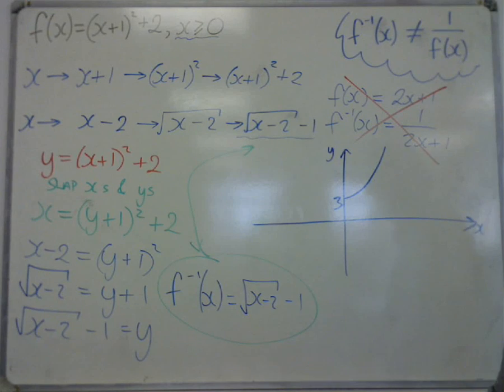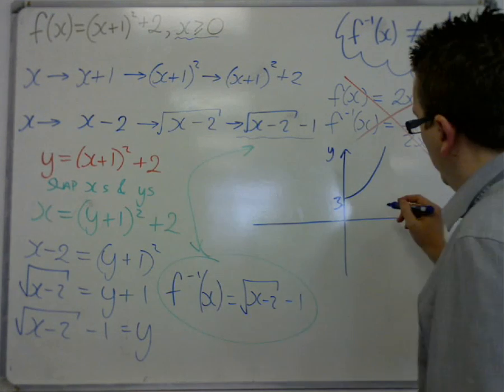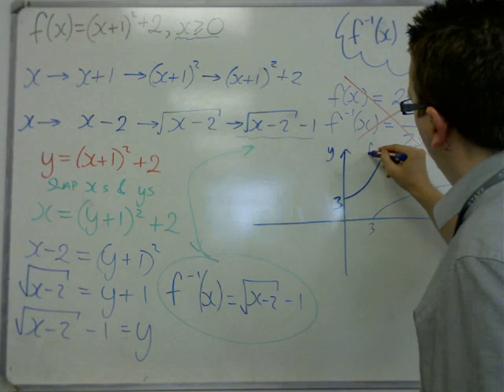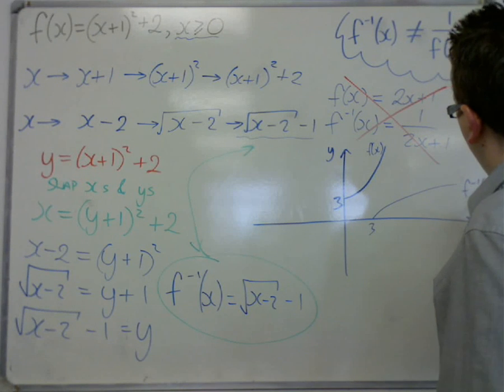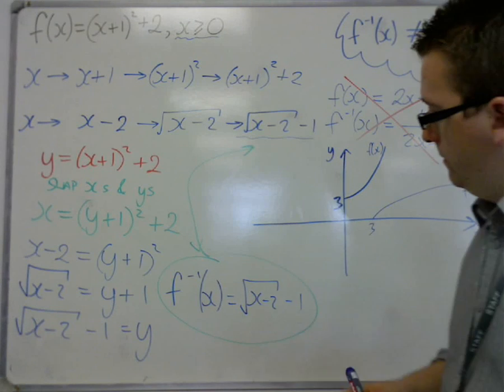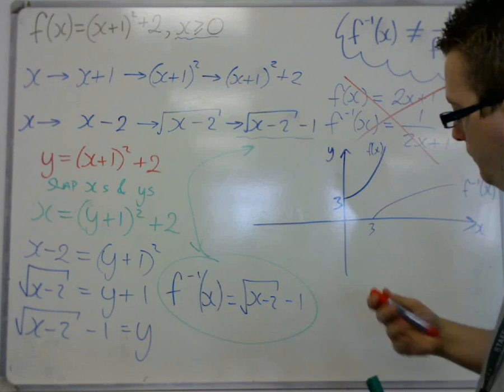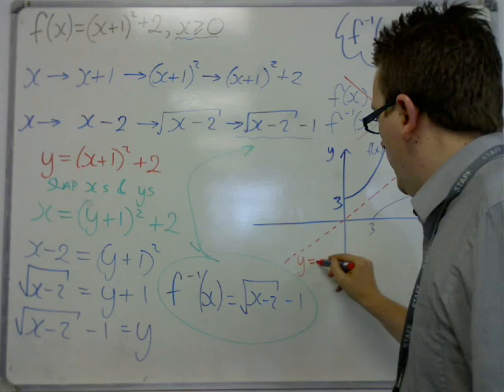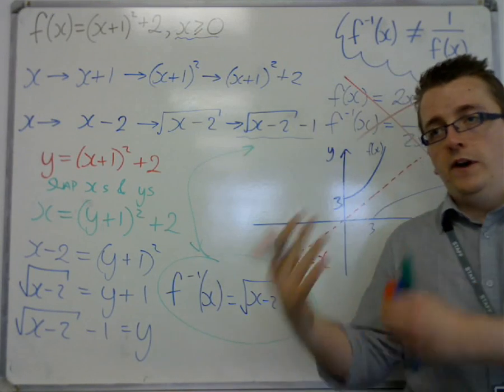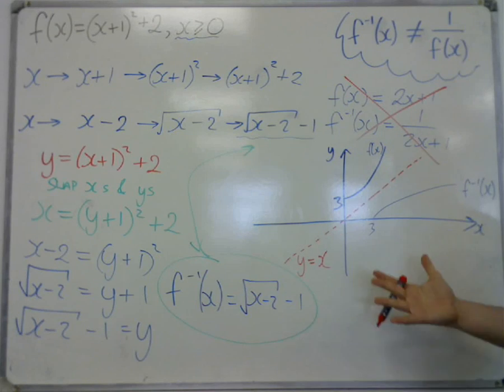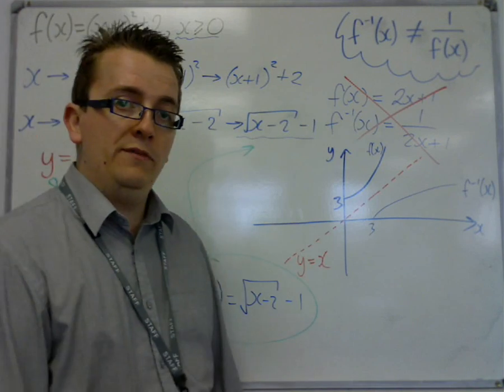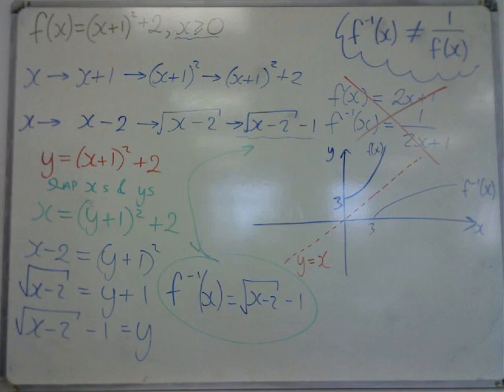And if I sketch this, well, when y is 0, x would have to be 3. And this graph looks something like this. You'll notice that this one, here is f of x. Here is f to the minus 1 of x. They both go through 3. 3 on the y-axis, 3 on the x-axis. They both look similar in shape. They're just a reflection in the line y equals x. And you'll find that a function and its inverse are always a reflection in this line. That's coming through the fact that we swapped the x's and y's, effectively.